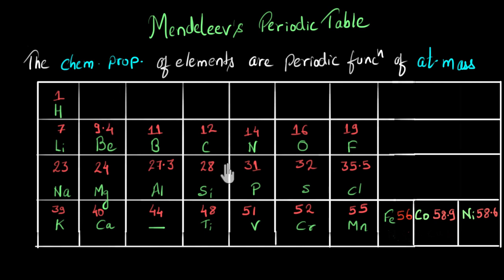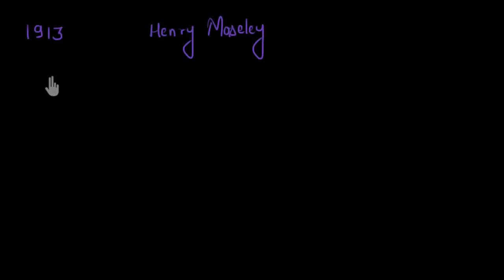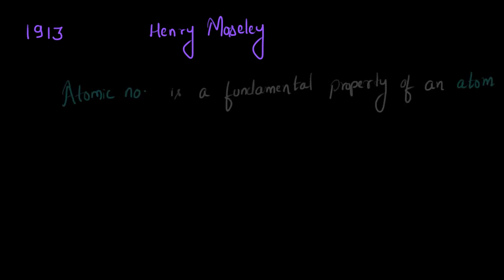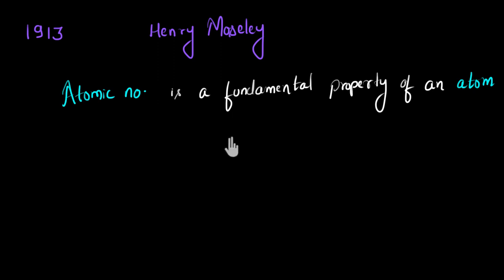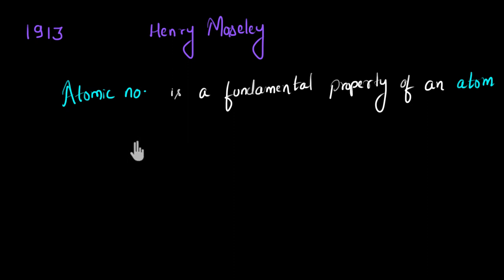The answer came after certain years. In 1913, we now knew about electrons, protons, and atomic number. Brilliant physicist Henry Moseley did an experiment to prove that atomic number is a fundamental property of an atom — not the atomic mass. This basically means that the chemical properties of an atom depend on the atomic number, not the atomic mass, and now this is well understood.